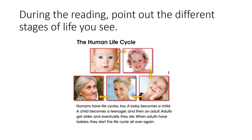The human life cycle. Humans have a life cycle too. A baby becomes a child, a child becomes a teenager, and then an adult. Adults get older and eventually they die. When adults have babies, they start the life cycle all over again.